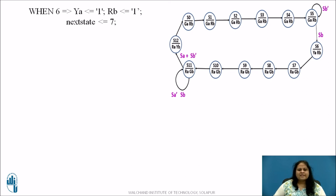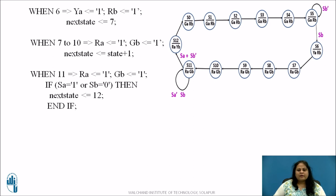Similarly, when in state 6 YA and RB are made 1 and next state is 7. When in 7 to 10 RA and GB are 1 and next state is state plus 1. When 11 RA and GB is 1 and if SA equal to 1 or SB equal to 0 then next state is 12. Finally, when in state 12 RA and YB is equal to 1 and next state is 0. End case and end process.